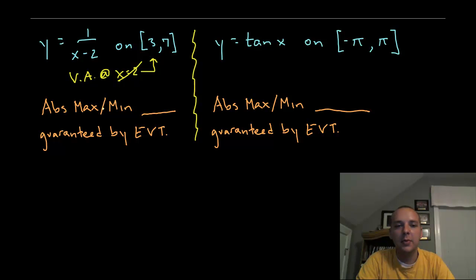So here the absolute maximum is guaranteed by the extreme value theorem. It is guaranteed, promised to me because it's continuous on that interval and it's defined on a closed interval from 3 to 7. So there is an absolute maximum and minimum for 1/(X - 2) in that interval.